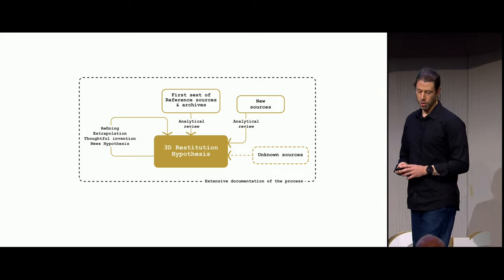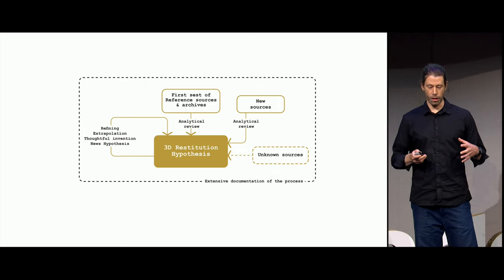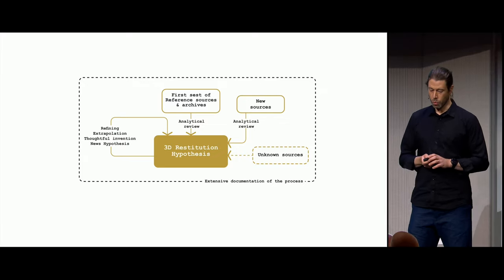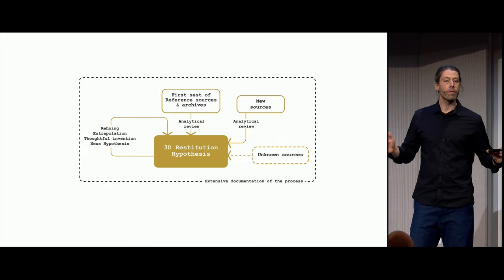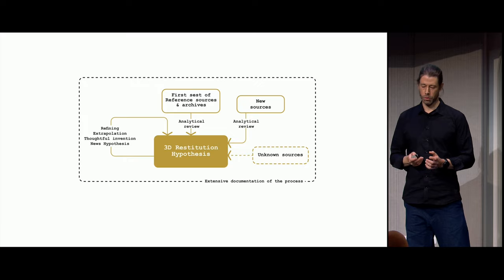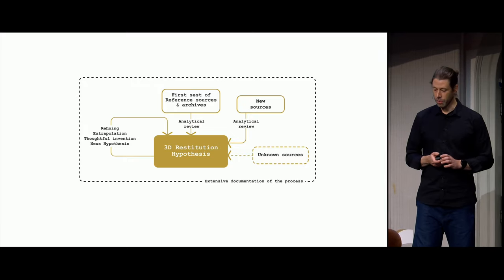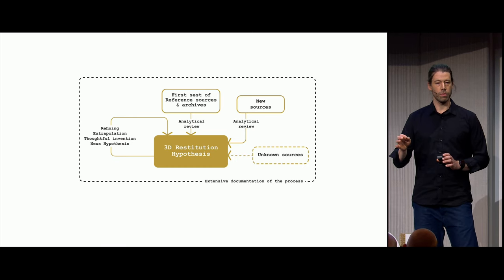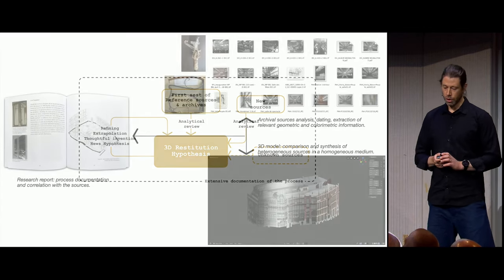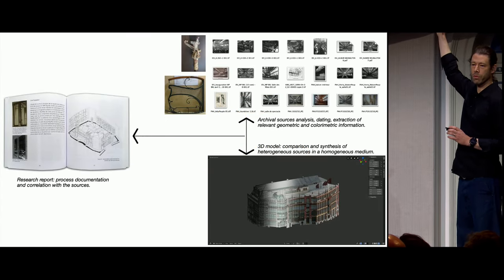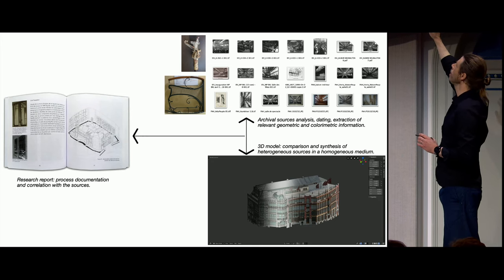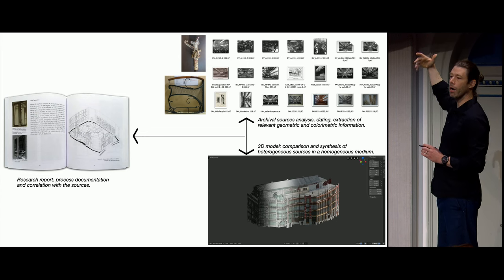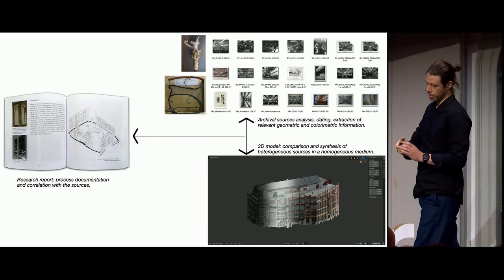We make decisions all along the process, and some are highly speculative — which is not a problem as long as it's mentioned. We need to speculate to fill the gaps, because there are a lot of things we don't know. What makes the scientific value of the work is that everything is thoroughly documented: every decision is traceable and connected to its sources. We have heterogeneous sources of heterogeneous nature, we extract information, and we synthesize it in a homogeneous medium — the 3D model — and document all the process.